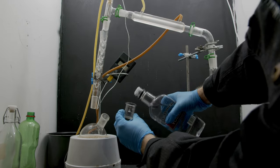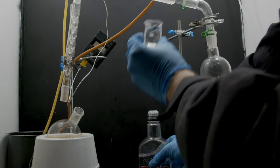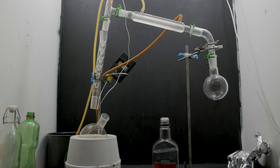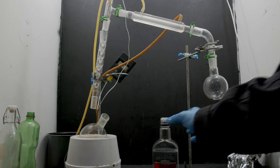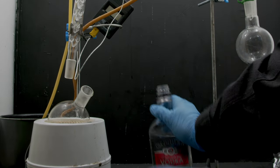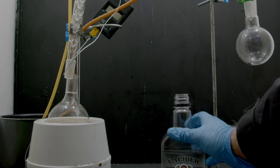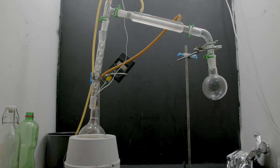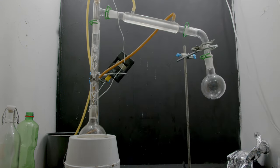Alright, so to start this off we pour like 20-ish milliliters of vodka, and then we take the cap off the top of the bottle and we just pour it in. We then add a stir bar and we close it all up. And now we can start distilling the alcohol.